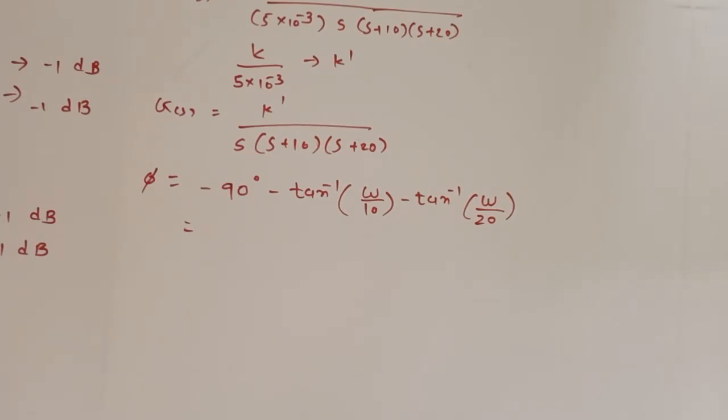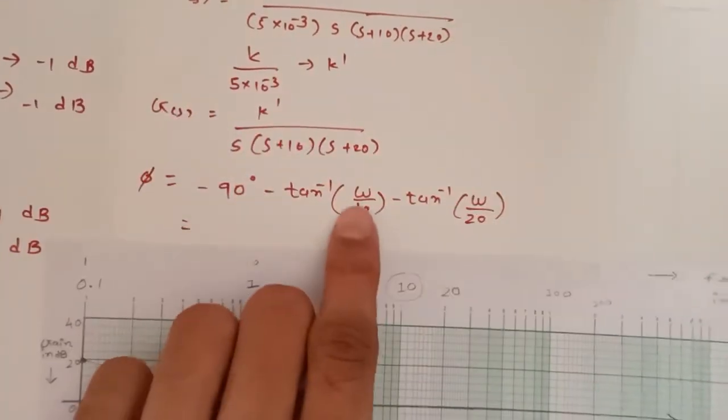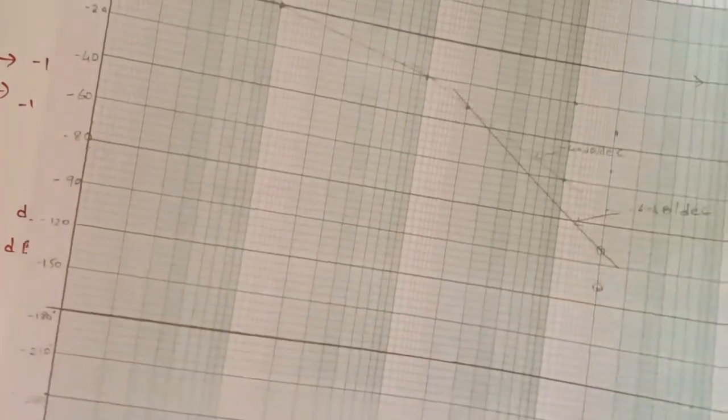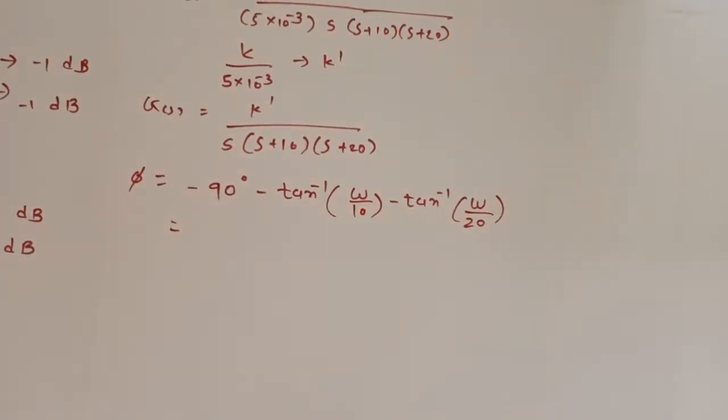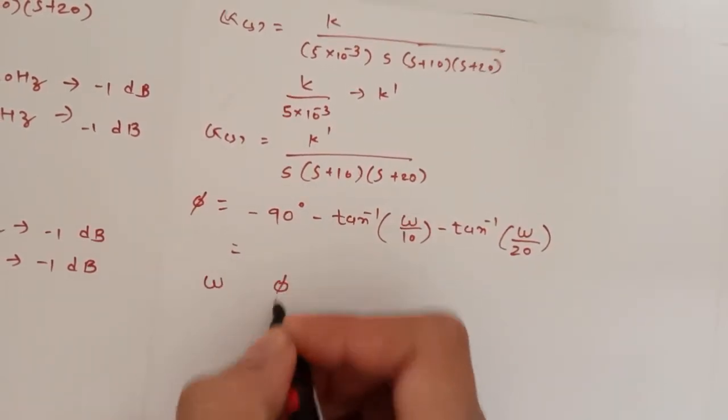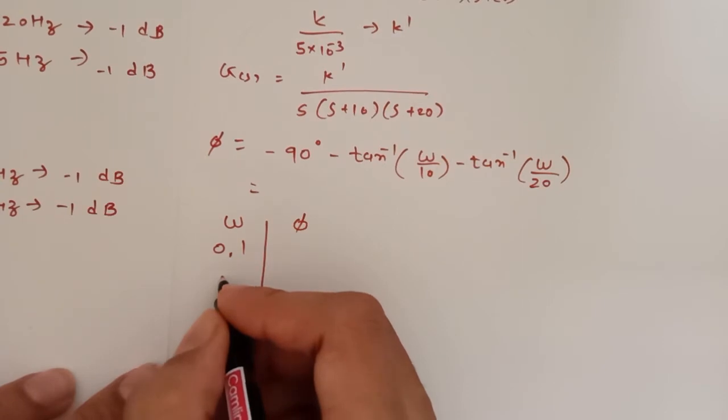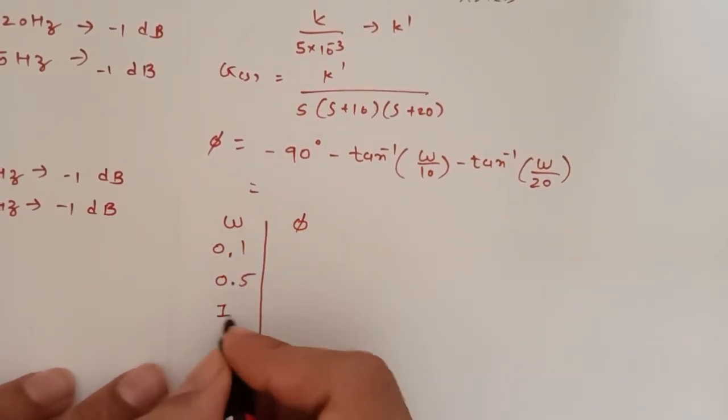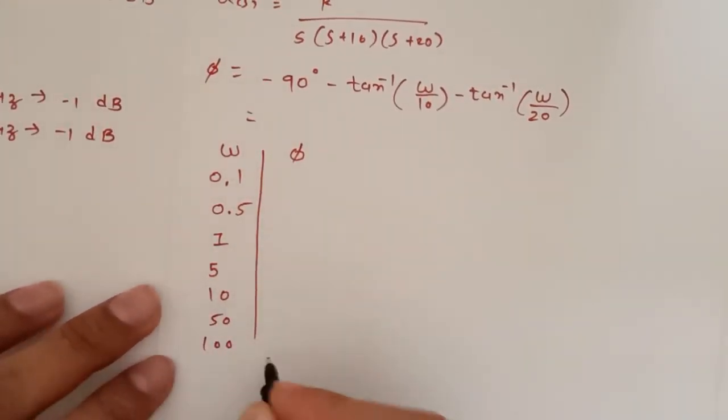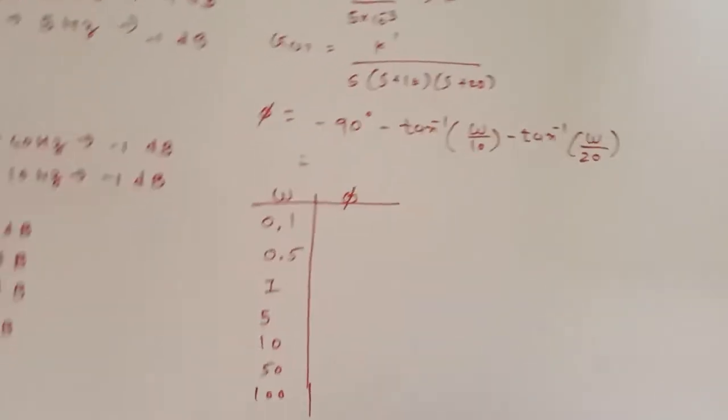Now take Bode plot graph and for different frequencies take omega at different frequency and find the value of phi and implement it in this type of graph. Now we take this phi omega and phi. Omega at 0.1, 0.5, 1, 5, 10, 50, 100. For these different values of omega what is the value of phi.